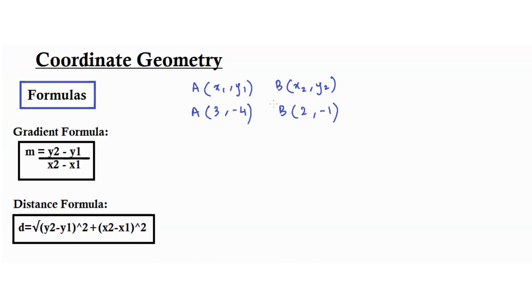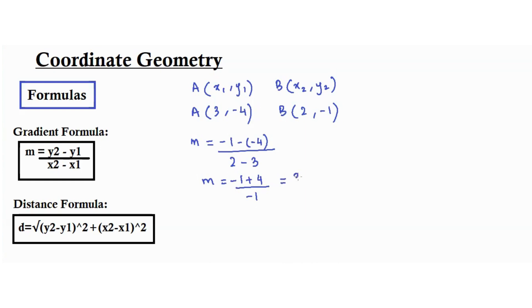To find the gradient for the line AB, we do m equals negative 1 minus negative 4, over 2 minus 3, which is negative 1 plus 4 over negative 1. That gives us 3 over negative 1, which equals negative 3. This is how you find the gradient when given two points.